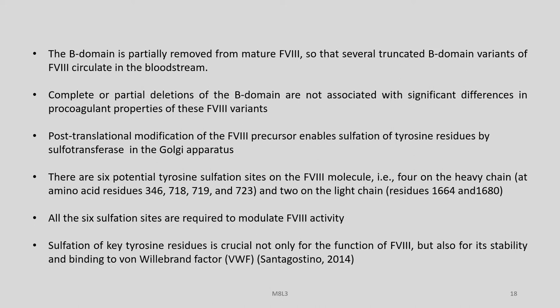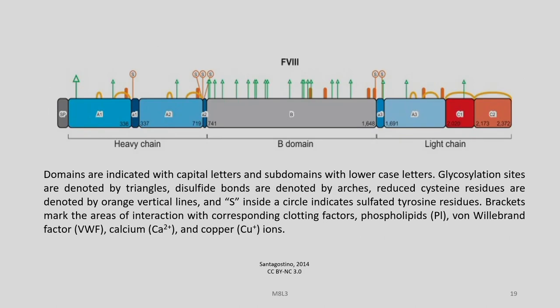In the structural diagram, domains are indicated with capital letters and subdomains with lower-case letters. Glycosylation sites are denoted by triangles, disulfide bonds by arches, reduced cysteine residues by orange vertical lines, and sulfated tyrosine residues are indicated with an 'S' inside a circle. Brackets mark areas of interaction with corresponding clotting factors, phospholipids, von Willebrand factor (VWF), calcium ions, and copper ions.